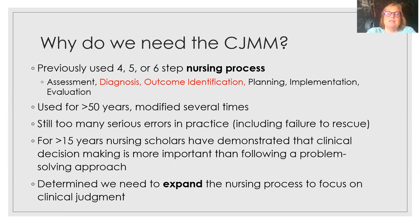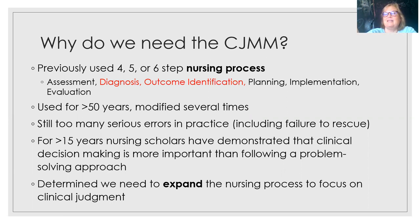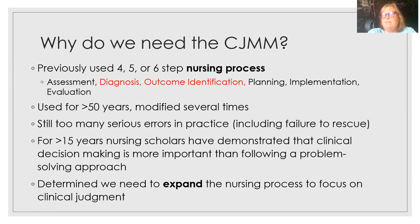Fairly recently there became a movement to include outcome identification. So specifically, very early in the process, after you've done your assessment, you determine what outcomes you're looking for. If a patient is short of breath, what outcome am I looking for? A decrease in that shortness of breath, a decrease in that work of breathing perhaps. So we identify that outcome early, then move to our planning stage — how do I plan, what plans are in place that will lead to that outcome, what do I need to do, in what order, and how?